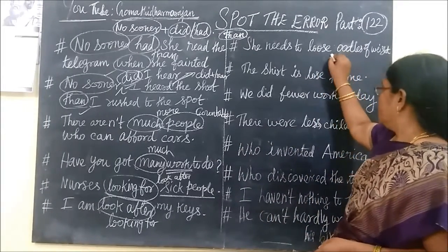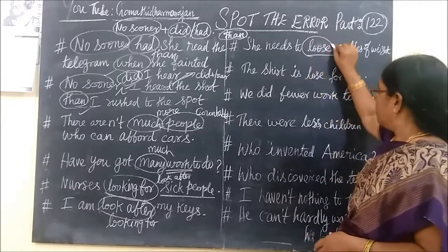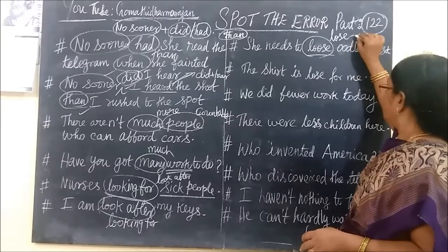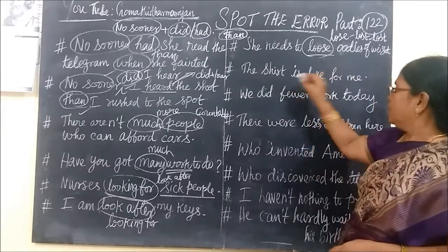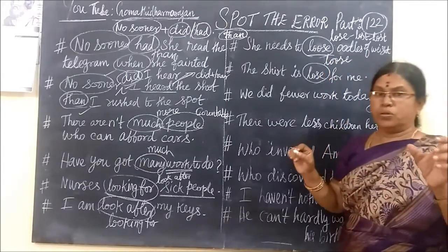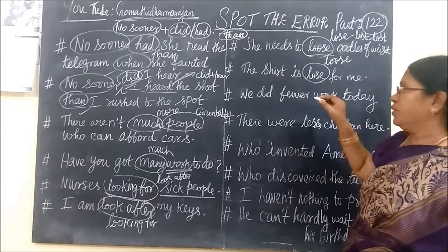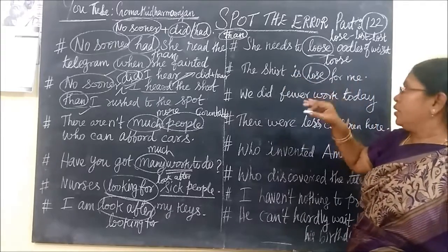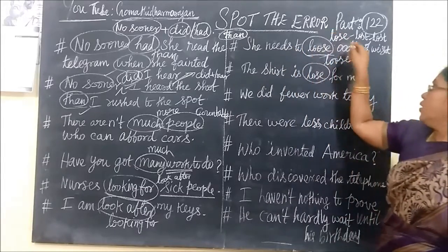Next question: 'She needs to loose orders of weight.' The word 'loose' is an adjective meaning 'not tight' — the opposite of tight. For example, 'The shirt is loose for me.' The verb form you need here is 'lose.' So the correct sentence is: 'She needs to lose some weight.' Remember: 'loose' is an adjective (not tight), while 'lose' is a verb.